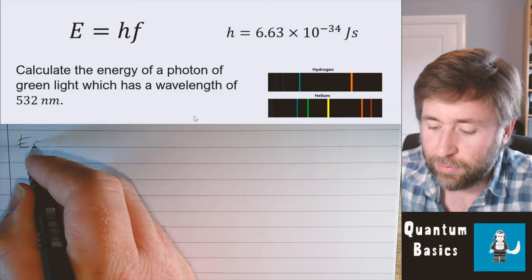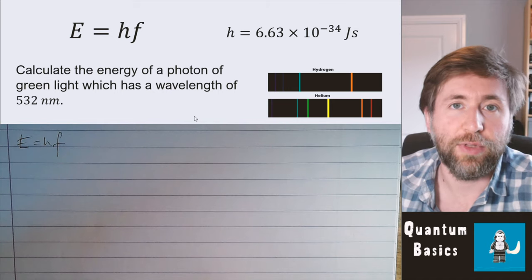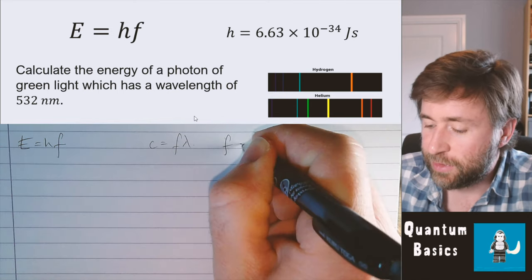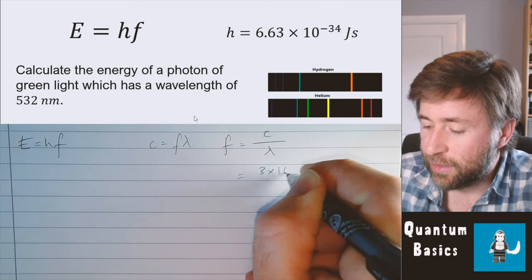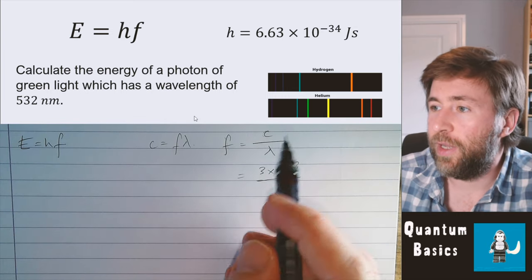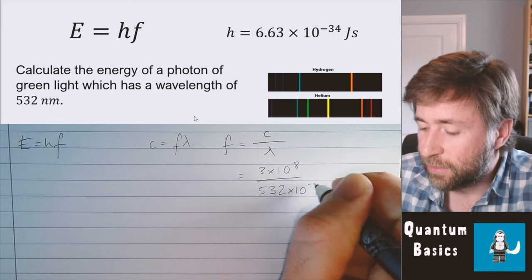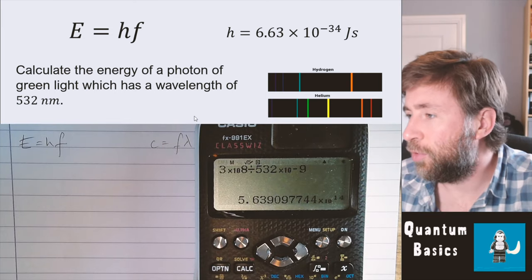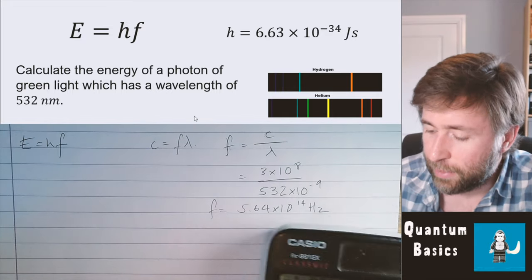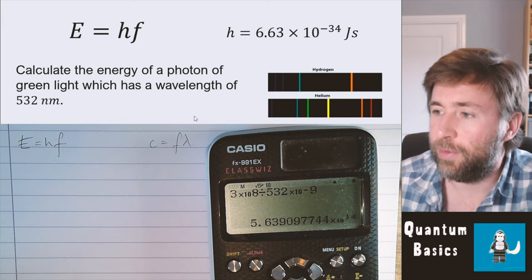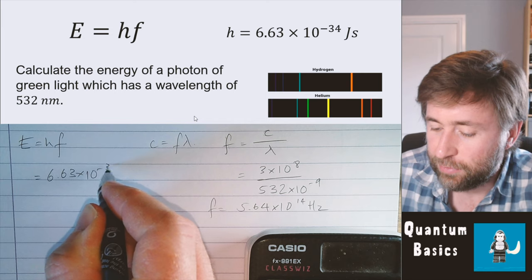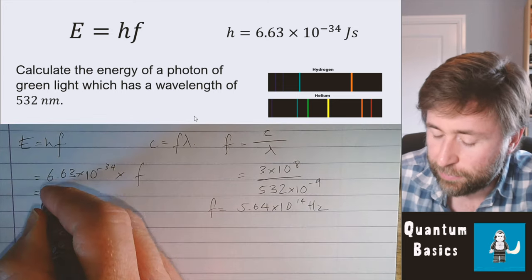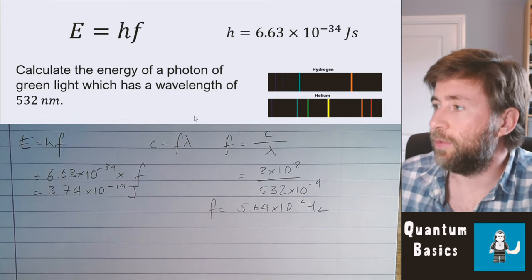We're still going to use E equals hf, our equation for the energy of a photon. So we need to use c equals fλ, because we've been given a wavelength and need a frequency. So frequency is c over λ — that's 3 times 10 to the 8 (the speed of light in a vacuum) over the wavelength. I see 'nano' and I write times 10 to the minus 9. That gives 5.64 times 10 to the 14. That's a slightly more complex one because you've had to do two steps — probably two marks.